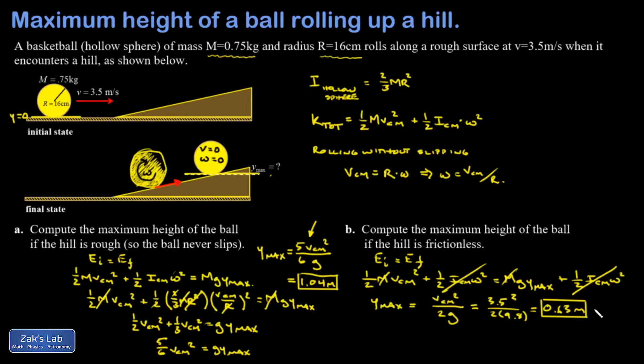Just making sense of this qualitatively: in the case of part A I had a rough surface and so there was a mechanism to convert the rotational kinetic energy into additional height, so you'll notice that my maximum height was higher in that case.